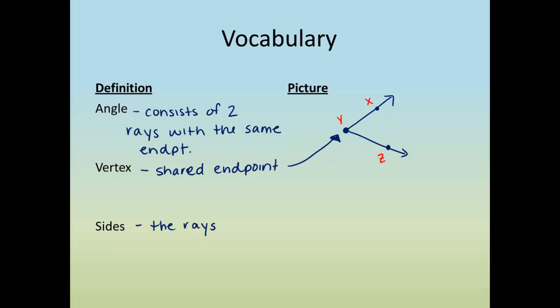If I were to say, what is the vertex of this angle? You would tell me the vertex is point Y. And if I say, what are the sides of this angle? You would name them as two rays. You would say ray YX. That's one of the sides. And ray YZ is another side. I'm naming them as rays, which means I must start with the endpoint.